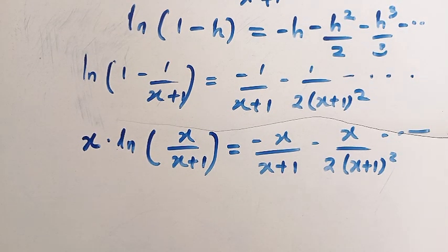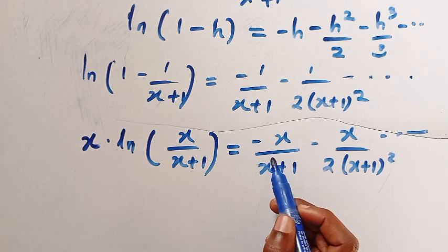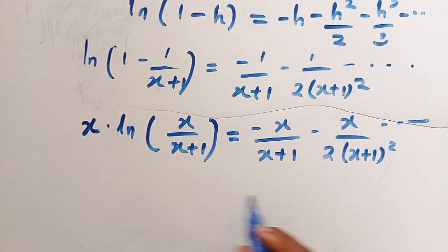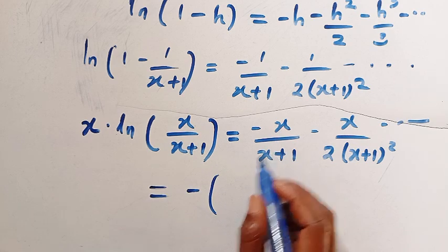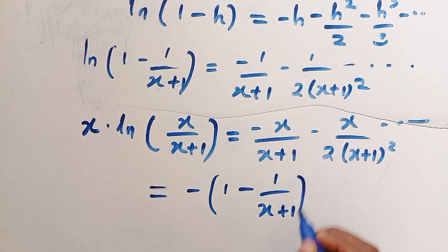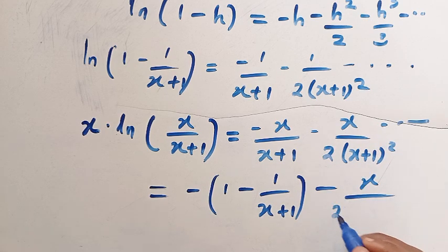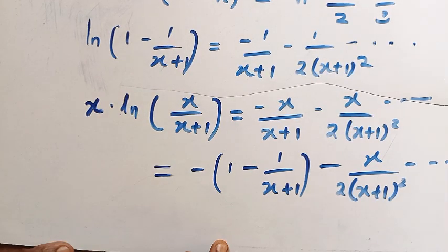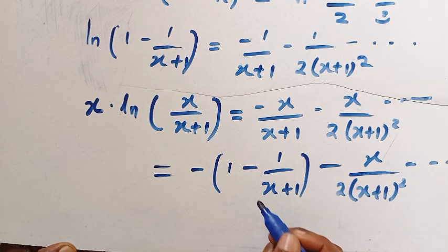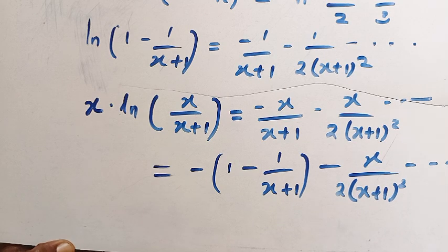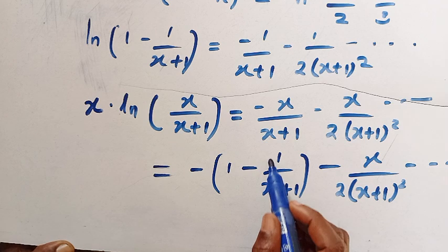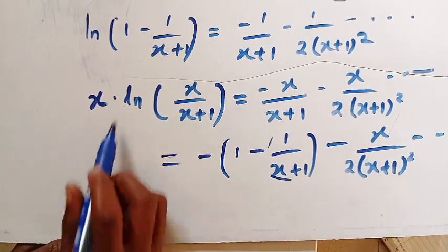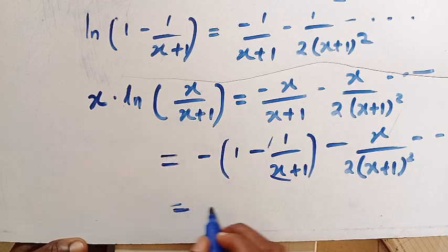As x approaches infinity, 1 over x plus 1 approaches 0 and all the remaining terms — x over x plus 1 squared, and so on — also approach 0. So we are left with only negative 1. Therefore, the limit as x approaches infinity of x times ln of x divided by x plus 1 equals negative 1.